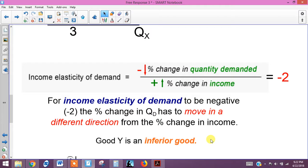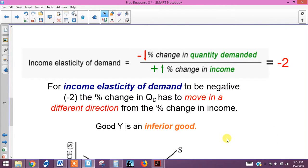So the rule here that you want to know is that if the income elasticity of demand is negative, then that means the good is most likely an inferior good. If it's positive, if a rise in income causes a rise in quantity demanded, that tells us that good Y would be a normal good. But it's not, it's negative, so it's an inferior good.